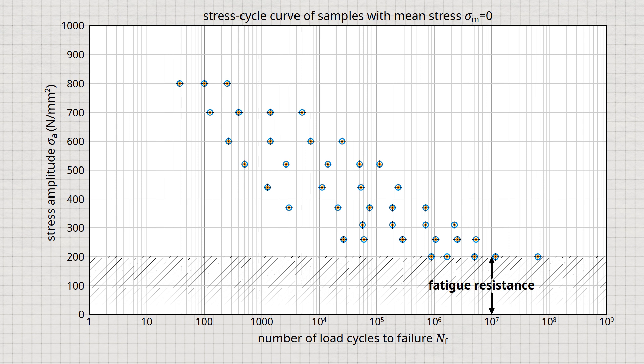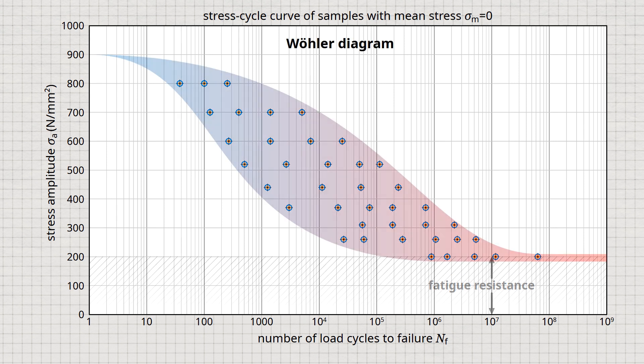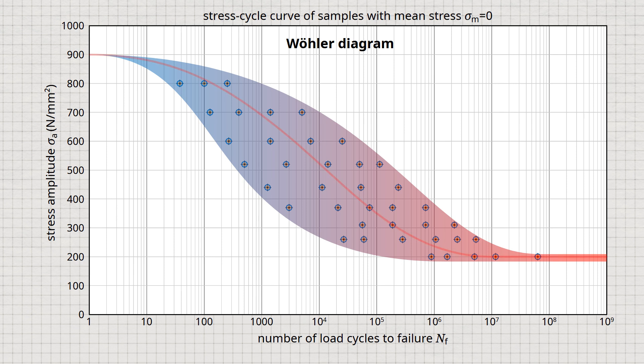If, for each tested sample, the respective stress amplitude is plotted against the number of endured cycles, the so-called Wöhler diagram is obtained. Due to the extreme range of load cycles, a logarithmic scale is chosen on the horizontal axis. For clarity, results are usually not displayed directly but evaluated statistically, and a probability curve is given where, for example, 50% of the samples have reached the respective number of load cycles. This stress cycle curve, also known as the Wöhler curve, is thus to be interpreted as a probability curve.